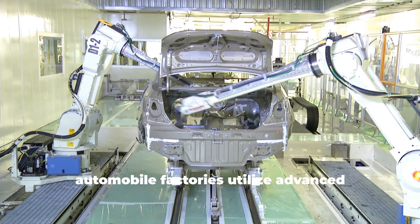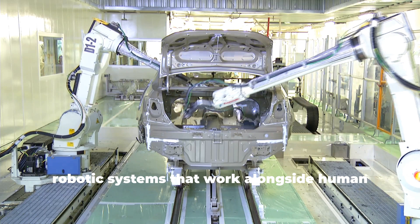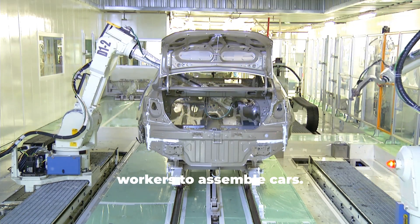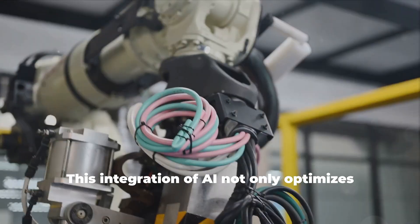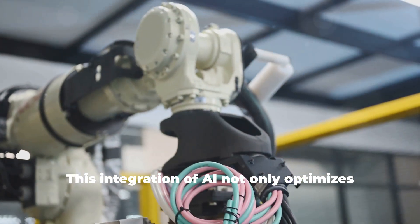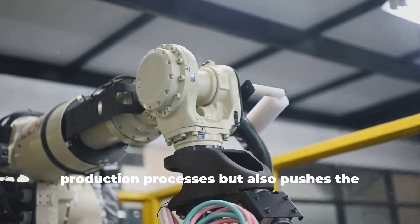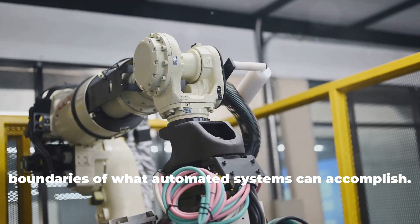For example, automobile factories utilize advanced robotic systems that work alongside human workers to assemble cars. This integration of AI not only optimizes production processes, but also pushes the boundaries of what automated systems can accomplish.